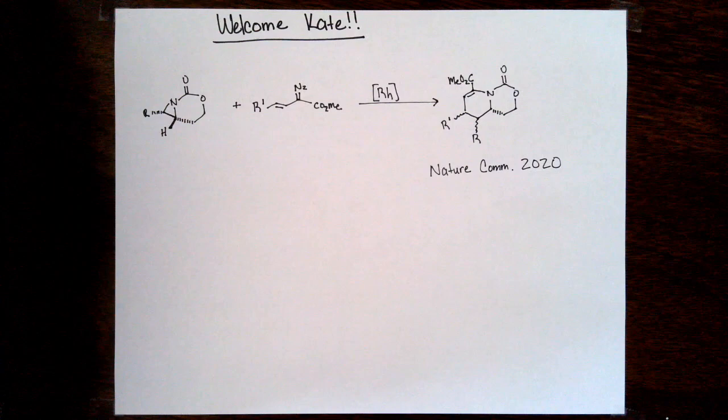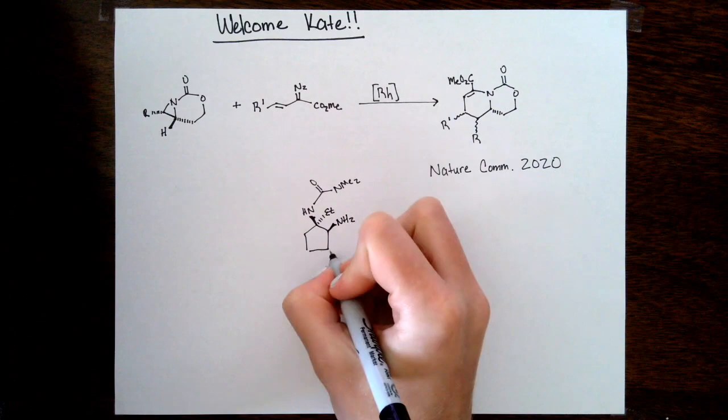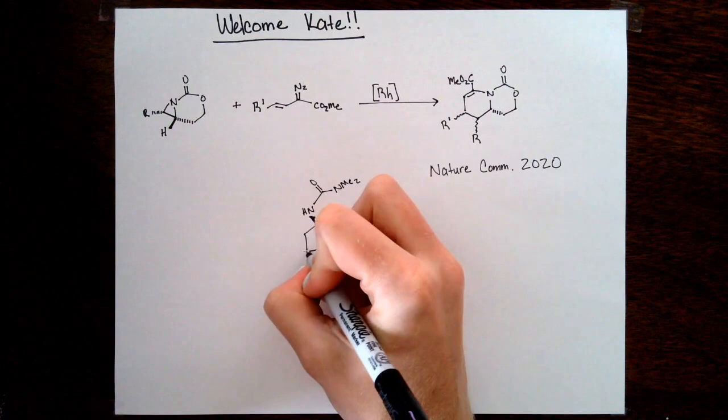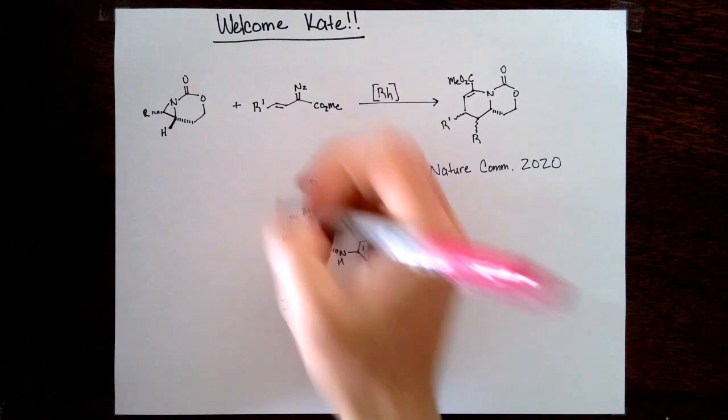These ylides decompose in a variety of different manners. I've studied the rearrangement reactions in that Nature Communications paper. We're looking at the formation of dehydropiperidines from the decomposition, which turns out to be a 1,4 pseudocyclotropic rearrangement of the ylide intermediate.